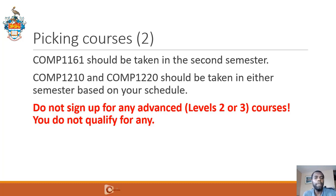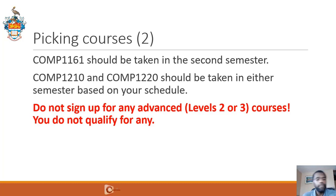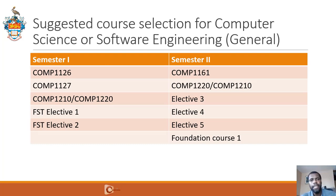Do not sign up for any advanced courses — that is Level 2 or 3 courses — you don't qualify for any at this point. You should be registering for Level 1 courses, and these are courses where the first digit will be a 1. If you've got a lower level matriculation offer, you may have to also take a preliminary course, and these are courses where the first digit is a 0. Now, what are the suggested courses to take if you're majoring in either Computer Science or Software Engineering — that's the three-year software engineering program?